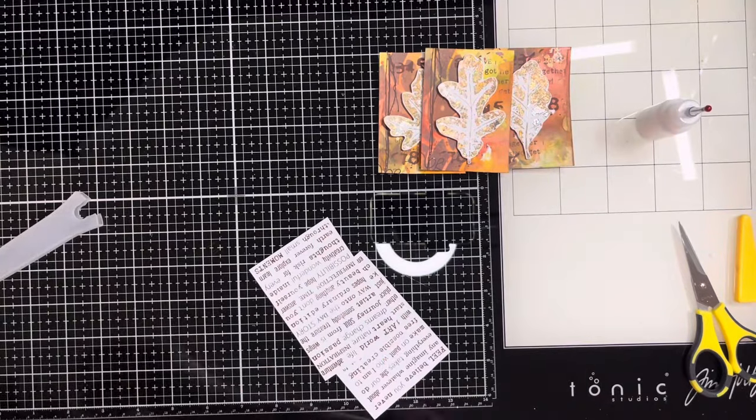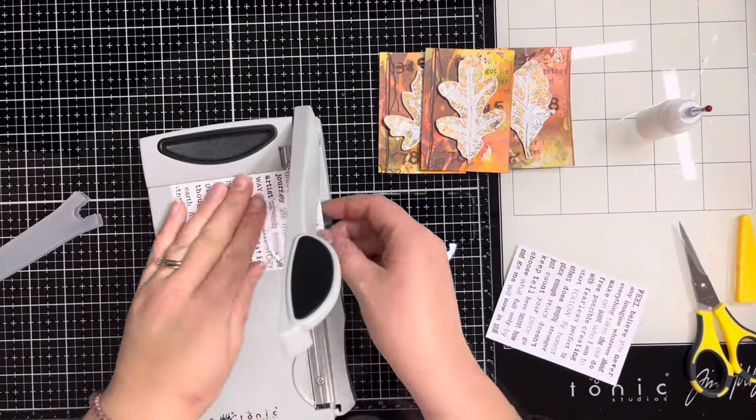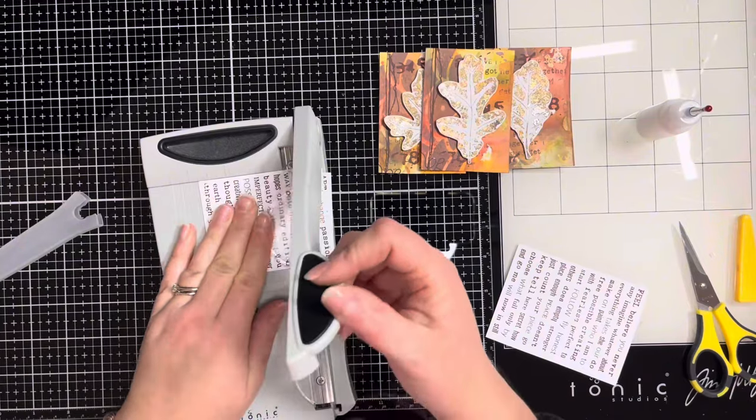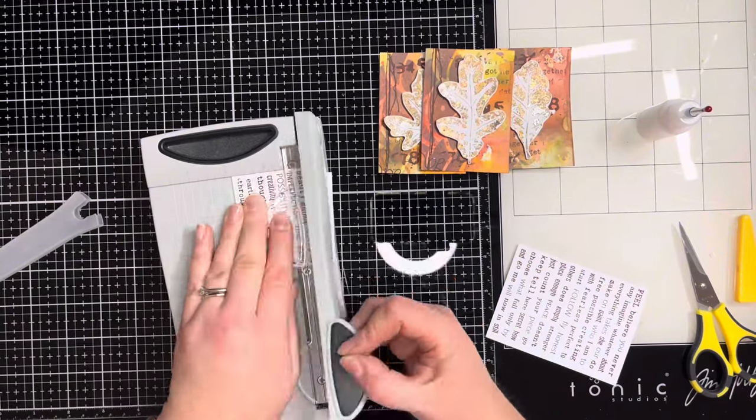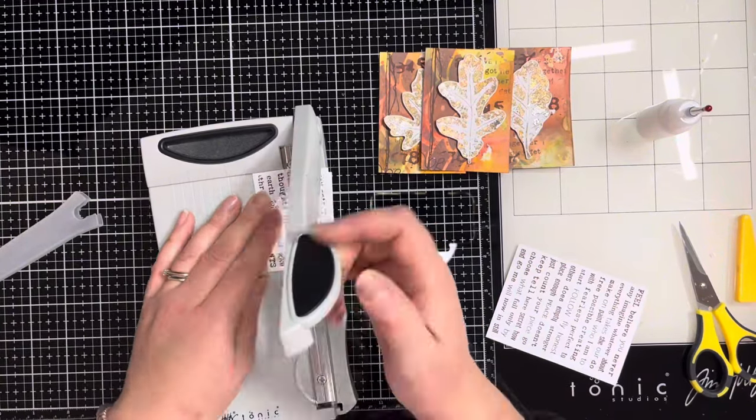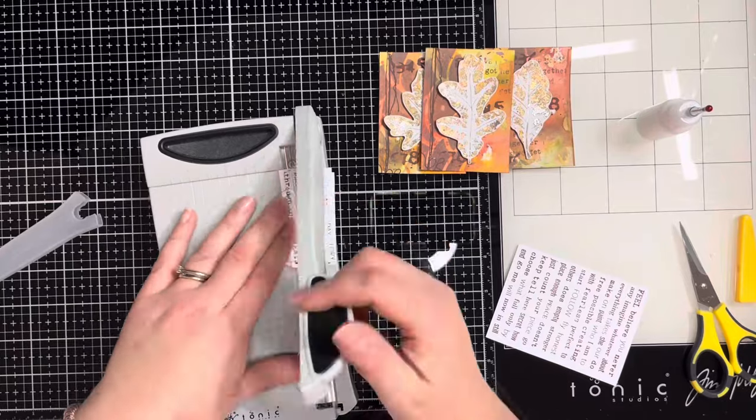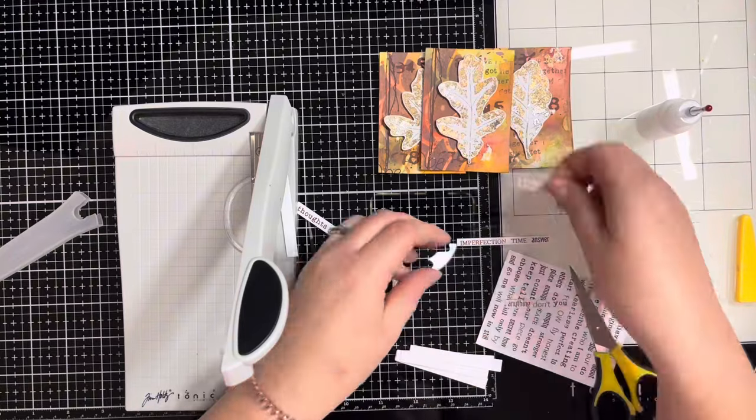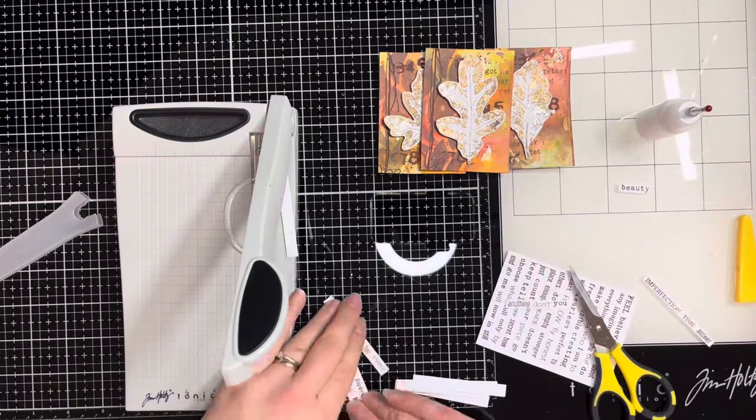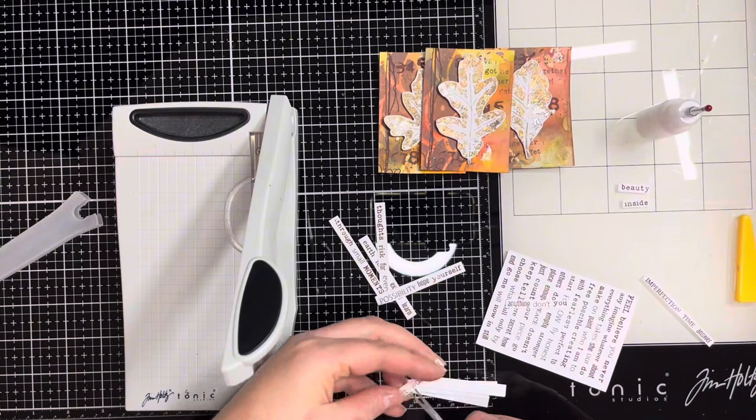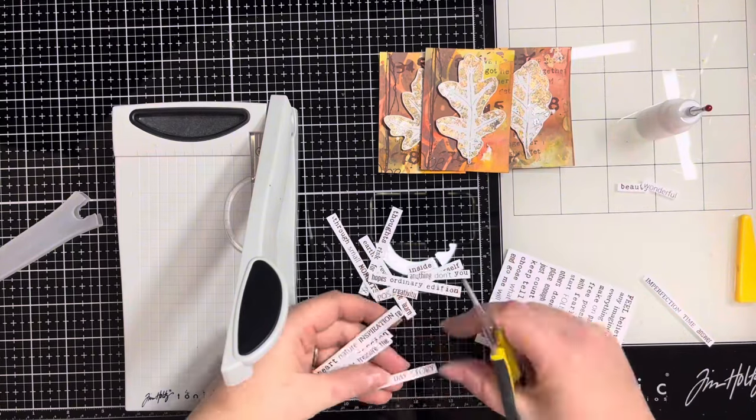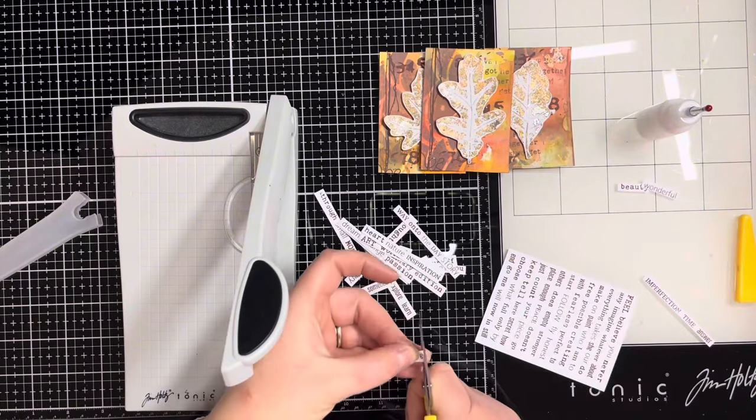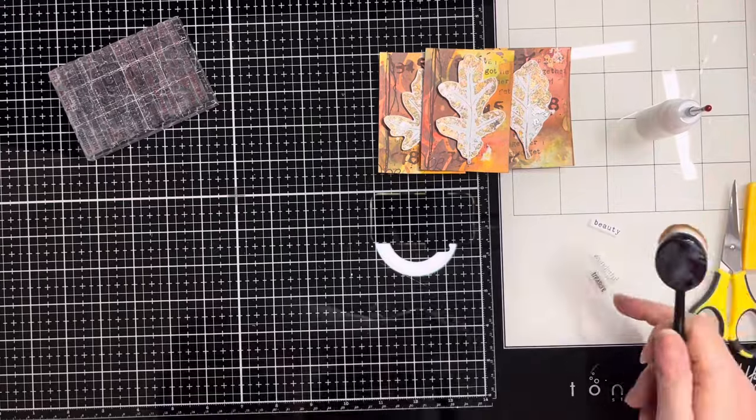I'm bringing in my mini Tim Holtz trimmer to show you how you can trim each line down into strips. When you know what words you want to use, you can cut a word out from the strip to create a sentiment on a card, journal page, or in our case the ATCs today. Once I've picked out three words I want to use for my sentiments, I'm trimming them out of the strips with my scissors.